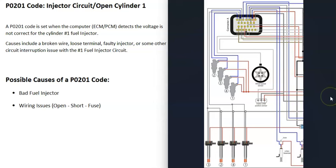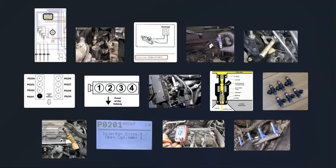When checking the wiring, it's a good idea to get schematics for your particular vehicle so you know where the wires are going. If the fuel injector tests good and there are no problems with it, then most likely there is a wiring issue — something going on inside that wiring is causing the P0201 code.